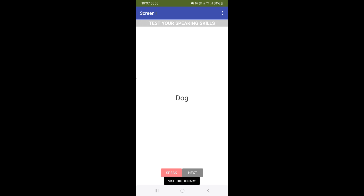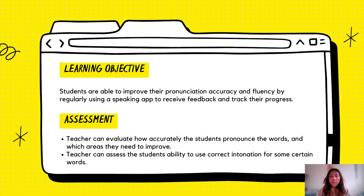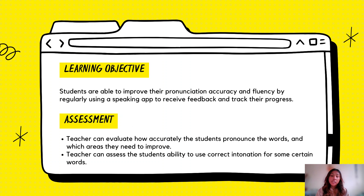Overall, that's how it is working. The learning objective that can be covered with this app is to improve student pronunciation accuracy and fluency in a target language by regularly using a speaking app to receive feedback and track their progress. From this, the teacher could also propose an assessment — first, in terms of pronunciation accuracy, the teacher can evaluate how accurately students pronounce words and which areas they need to improve. Second, the teacher can assess the student's ability to use correct intonation for certain words.